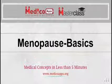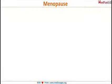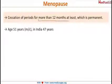My name is Dr. Gunjan and today we will be discussing menopause and the basics around it. Menopause is basically the cessation of periods for more than 12 months in a row. If the periods are continuously absent for 12 months or more, we call it menopause.